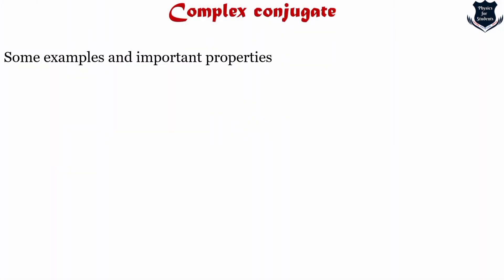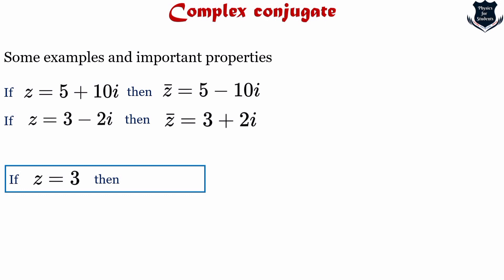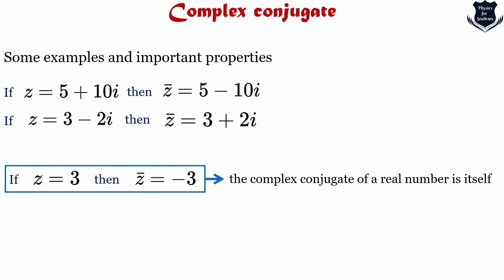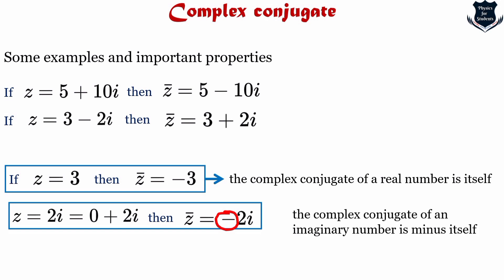There are some important properties worth mentioning. If z = 5 + 10i, then the complex conjugate is 5 − 10i. If z = 3 − 2i, then the complex conjugate is 3 + 2i. Importantly, if z = −3 (a real number), then the complex conjugate is −3 itself — the complex conjugate of a real number is itself. And if z = 2i, the complex conjugate is −2i — the complex conjugate of a purely imaginary number is its negative.